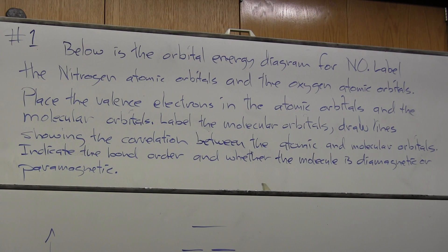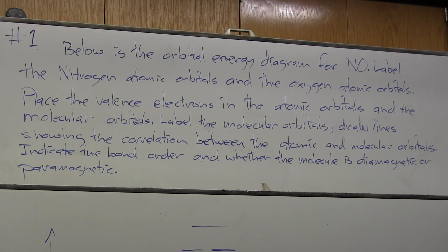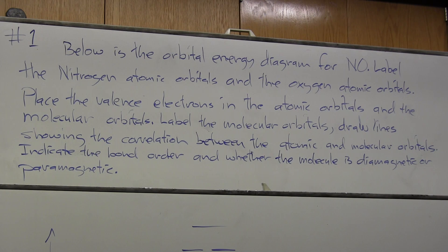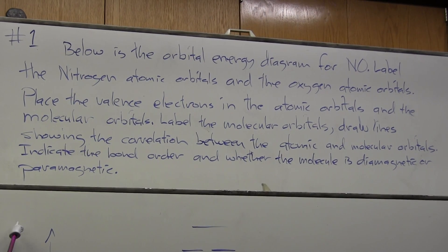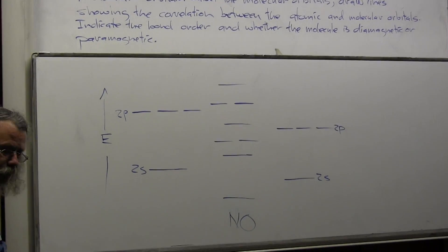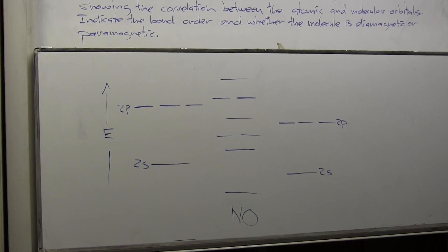This is practice midterm number three, problem number one. The problem is: below is the orbital energy diagram for nitrogen monoxide. Label the nitrogen atomic orbitals and the oxygen atomic orbitals. Place the valence electrons in the atomic orbitals and the molecular orbitals. Label the molecular orbitals. Draw a line showing the correlation between the atomic and molecular orbitals. Indicate the bond order and whether the molecule is diamagnetic or paramagnetic. You have a diagram to fill in, and this is a reasonably straightforward process.